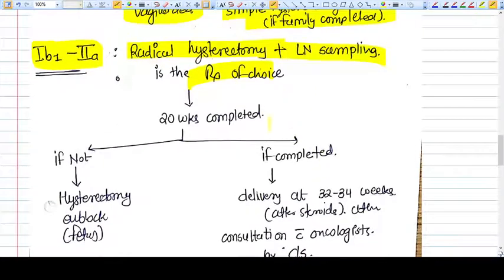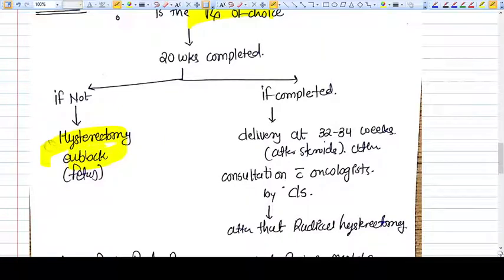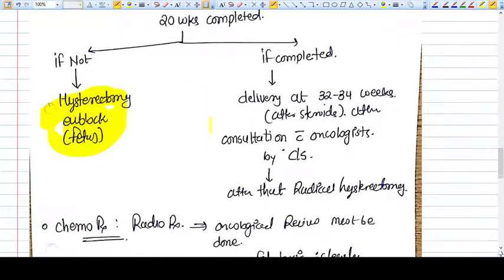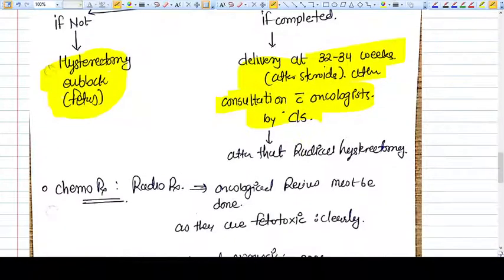The question is when will you give this treatment? If the pregnancy is less than 20 weeks, you can go for hysterectomy en bloc with the fetus. If 20 weeks is not completed, the consensus is to continue the pregnancy, deliver at the earliest possible time at 32 to 34 weeks after fetal steroids, consult with the oncologist, and do cesarean section followed by radical hysterectomy.